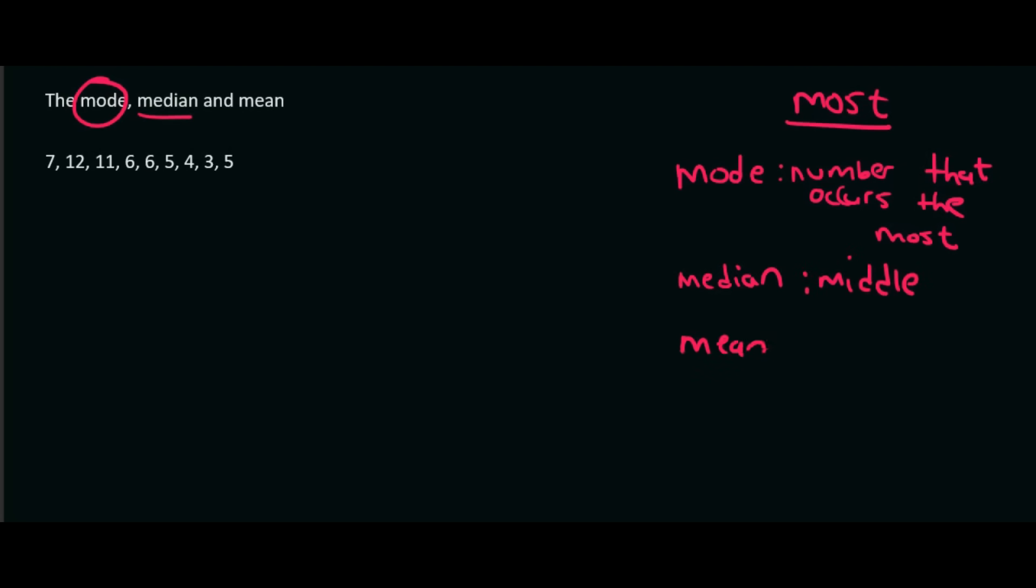And then the mean, well, this is the one where the teachers are being very mean because they're wasting your time. Because the mean takes forever to calculate because that's the average. And that's the one where you have to add everything together and then divide by the number of items. Of course, I'm going to show you how this all works in this video. But those are the three things you need to remember.